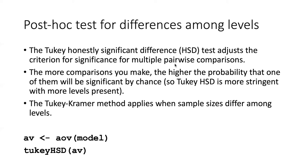Normally when we run a test, P has to be less than 0.05. But if we do multiple comparisons, then P has to be less than some lower number than 0.05 in order to honestly say that a pairwise comparison is significant. The more levels that are present, the more stringent Tukey HSD is, because the more comparisons you make, the higher the likelihood that one will be significant by chance.